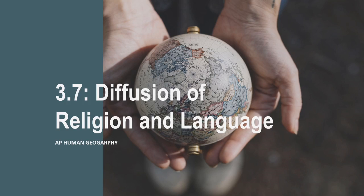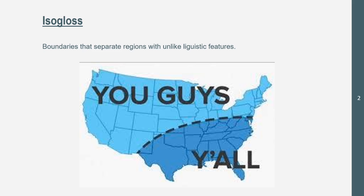Hey everyone, this is Asen here, and welcome back to AP Human Geography. We're going to be getting into 3.7 Diffusion of Religion and Culture. No prerequisite terms — everything that you need to know is basically going to be covered in this video. So here we go.